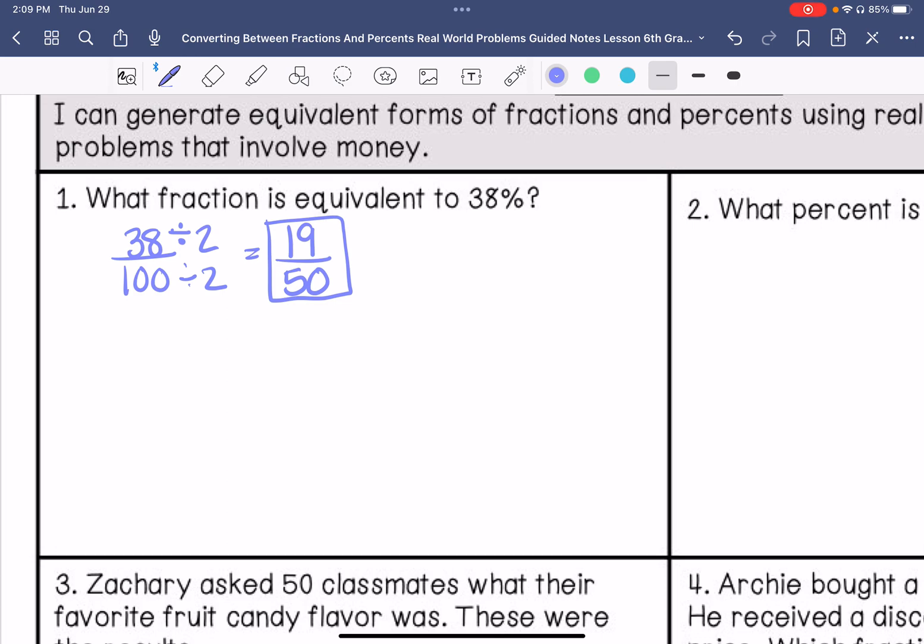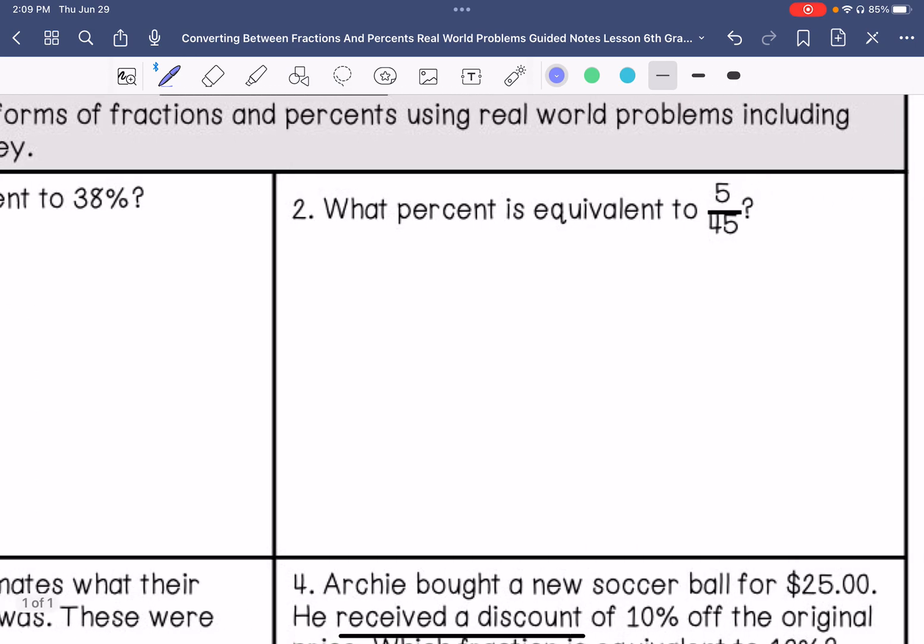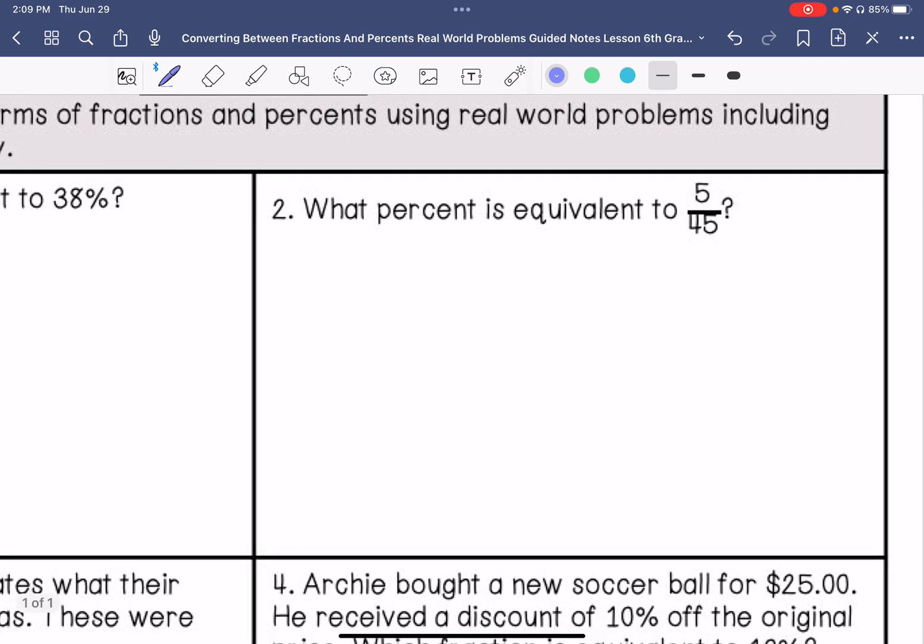We're going to move on to number two. What percent is equivalent to 5/45? So we are going to do 5 over 45. We want to get this to 100, so we're going to multiply it by 2, which is 10 over 100. So that is equivalent to 10 percent.